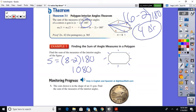A stop sign with the regular octagon. Anything that has eight sides, eight angles, is going to add up to 1080. All right. Let's pause the video and try the monitoring progress question.